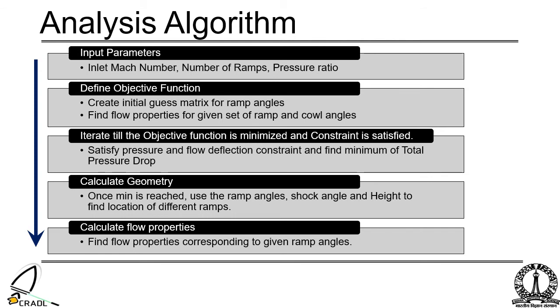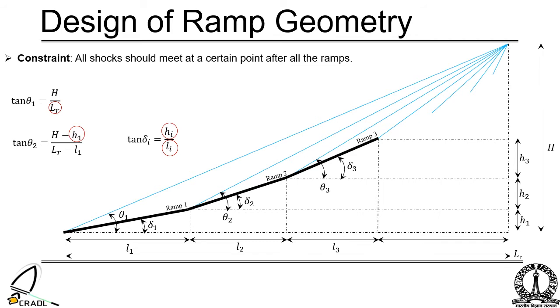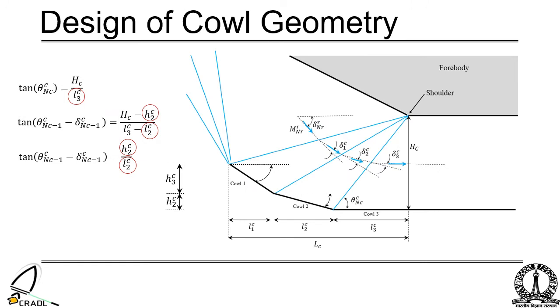Once the deflection angles are known, the flow properties are calculated based on the upstream Mach number and the deflection angle. The ramp geometry can be calculated using wave angle and the deflection angle. It is assumed that the upstream shock shields the downstream shock to provide the desired compression ratio. The design of cowl geometry can be generated similar to the ramp geometry by using deflection and wave angle using simple trigonometric relations.